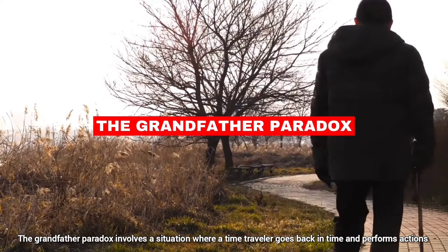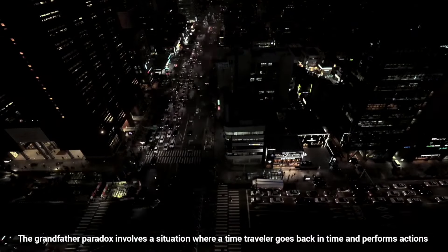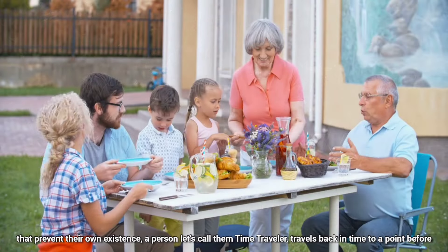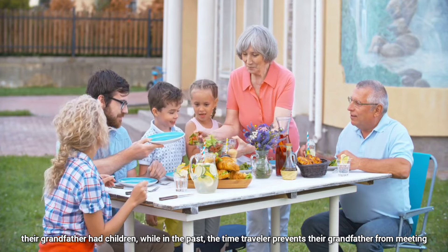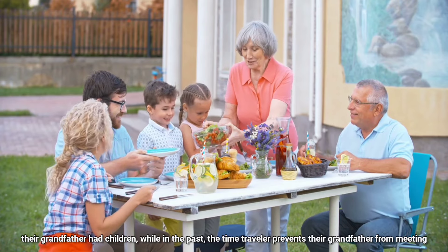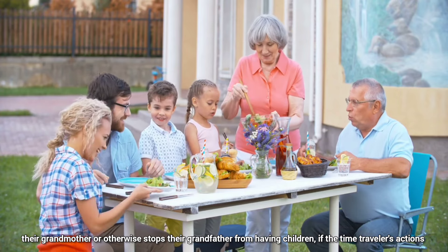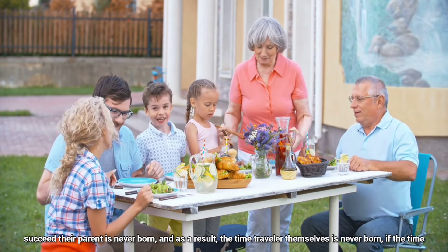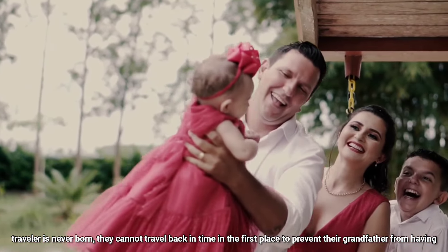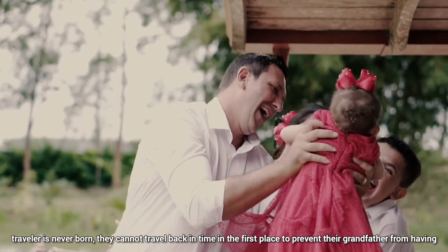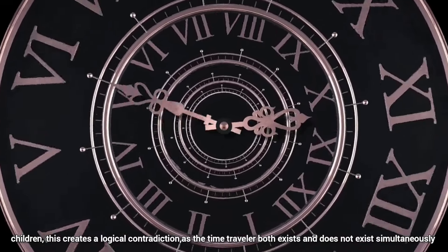The Grandfather Paradox. The Grandfather Paradox involves a situation where a time traveler goes back in time and performs actions that prevent their own existence. A person, let's call them a time traveler, travels back in time to a point before their grandfather had children. While in the past, the time traveler prevents their grandfather from meeting their grandmother or otherwise stops their grandfather from having children. If the time traveler's actions succeed, their parent is never born, and as a result, the time traveler themselves is never born. If the time traveler is never born, they cannot travel back in time in the first place to prevent their grandfather from having children. This creates a logical contradiction as the time traveler both exists and does not exist simultaneously.